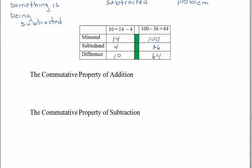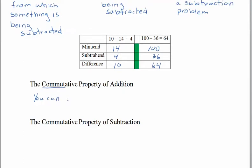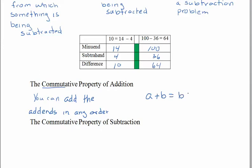Let's talk about the commutative property of addition. 'Commutative' has the root word 'commute,' just like you commute back and forth to work or school — it talks about moving things. The commutative property of addition says you can add numbers in any order. You already know that 5 plus 3 equals 3 plus 5. In symbols: a + b = b + a.